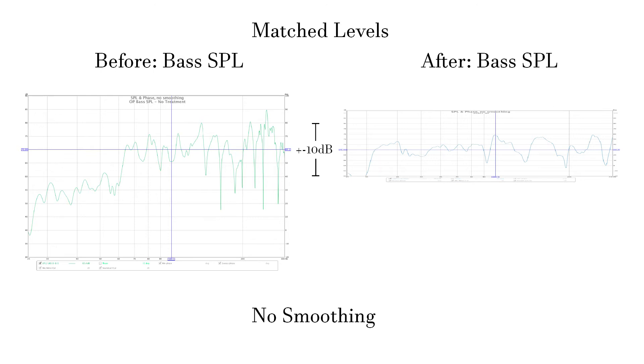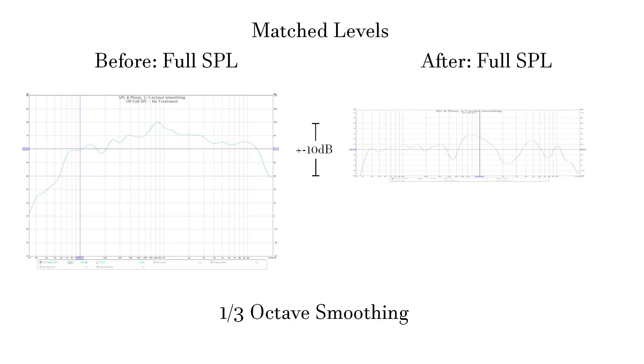Next image will be the third octave smoothed full SPL response. Again, this might look worse, but I don't think so. Instead of plus 10 DB at 750 Hertz, we're only up five and a half DB at 800 Hertz and the Q is lower. We're down five and a half DB at 2250 Hertz, but I think if you were to average out the response, we'd still be more flat than before. Again, note the bass extension.